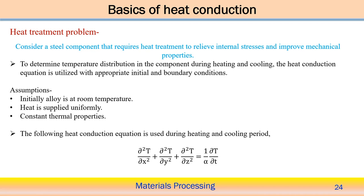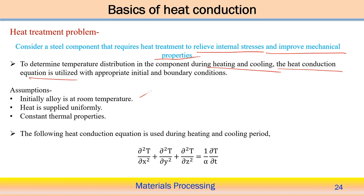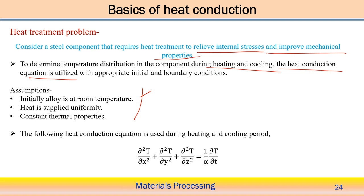Now let us look into the heat treatment problem. We consider a steel component that requires heat treatment to relieve internal stresses. Heat treatment means we apply a heat flux to the domain, internal stresses are relieved, and mechanical properties are improved. The temperature distribution can be obtained in the component during the heating and cooling phases using the heat conduction equation with appropriate initial and boundary conditions. Initially the alloy is at room temperature — that is the initial condition — and heat flux is supplied uniformly, assuming constant thermal properties.